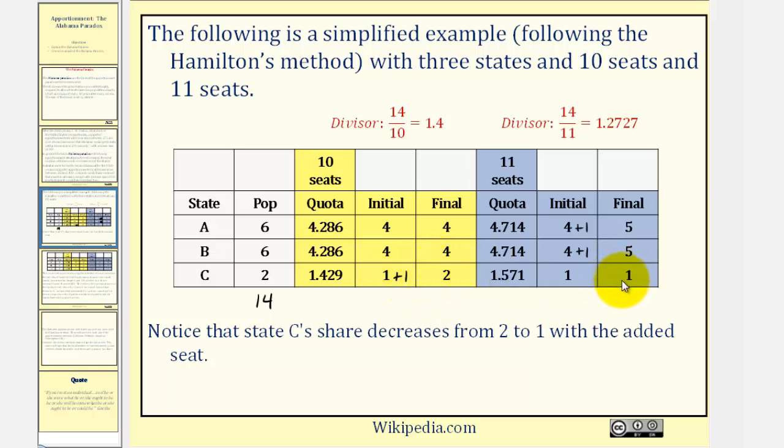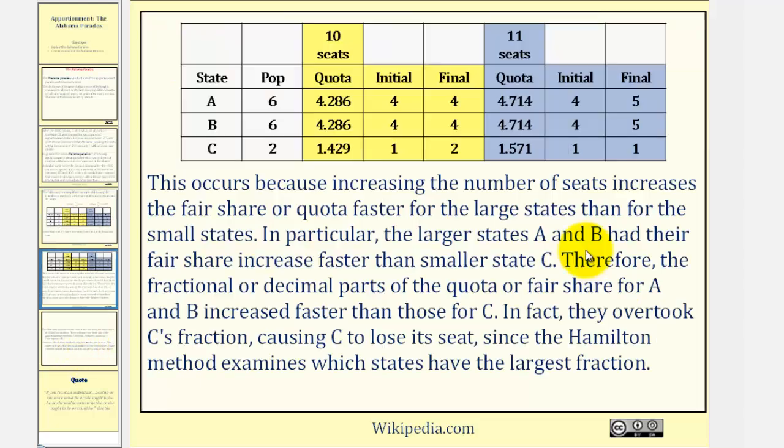This occurs because increasing the number of seats increases the fair share or quota faster for the larger states than for the smaller states. In particular, the larger states A and B had their fair share increase faster than smaller state C. Therefore, the fractional or decimal parts of the quota, or fair share, for A and B increased faster than those for C. In fact, they overtook C's fraction, causing C to lose its seat, since the Hamilton method examines which states have the largest fraction, or decimal part of the quota.